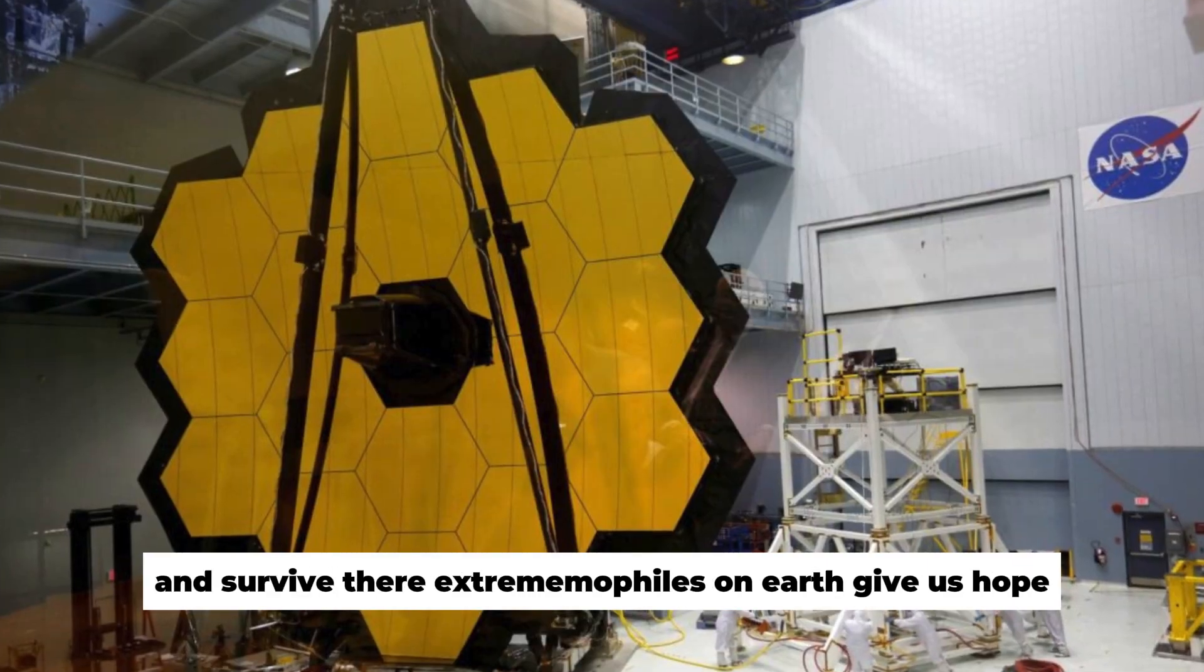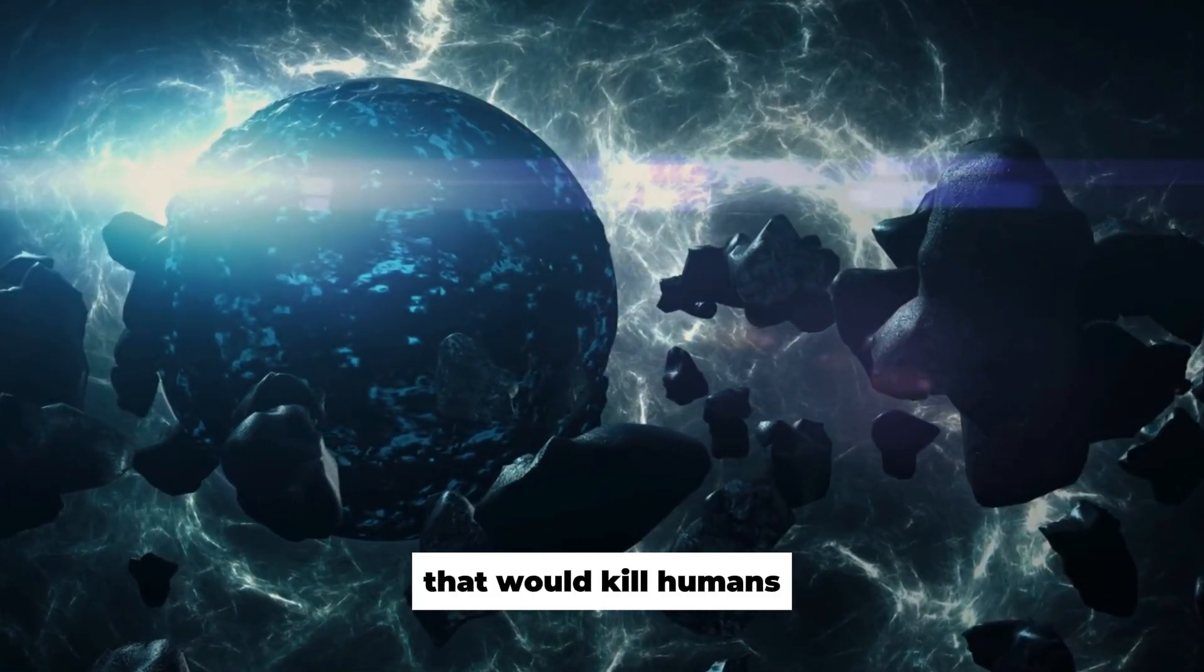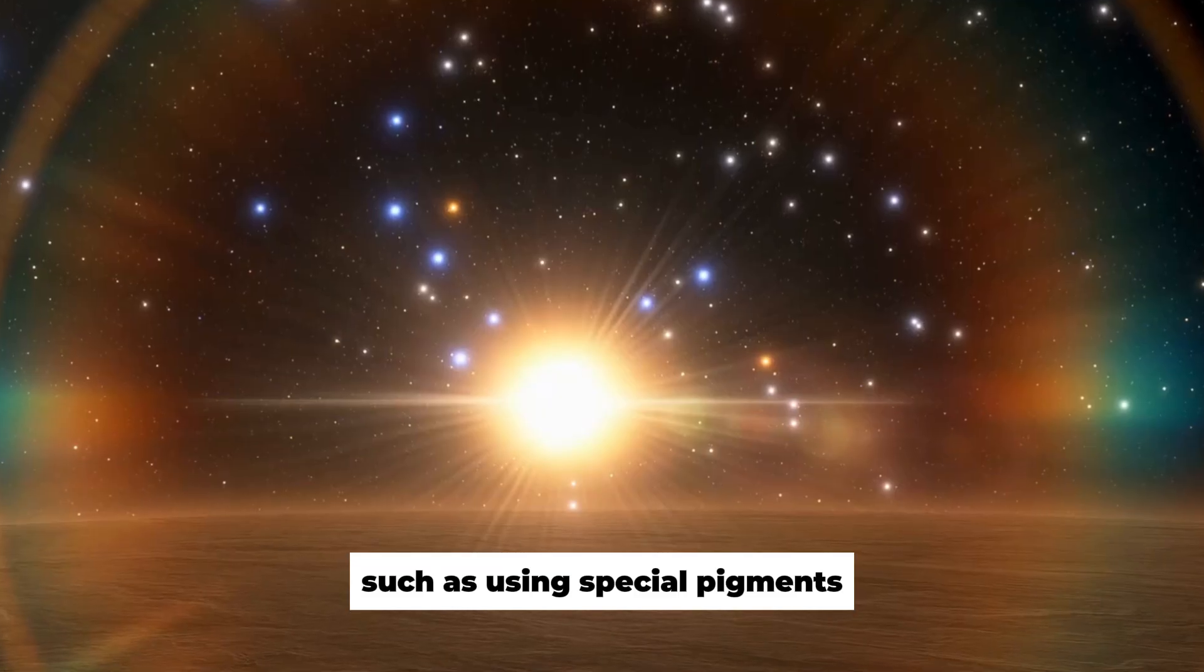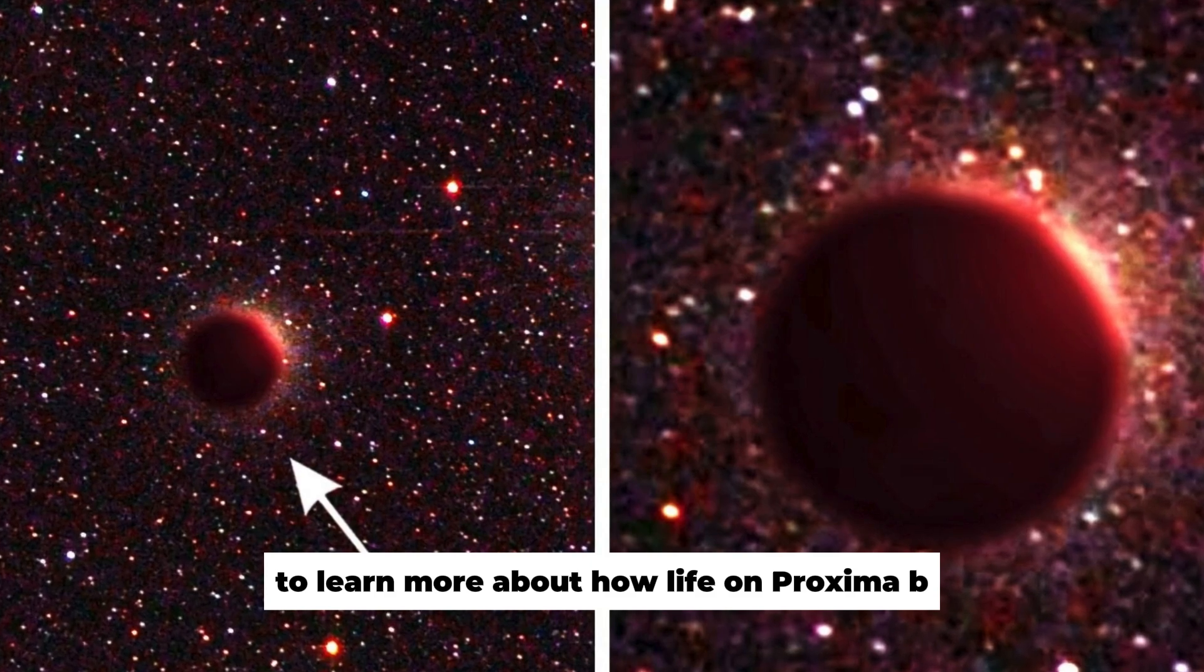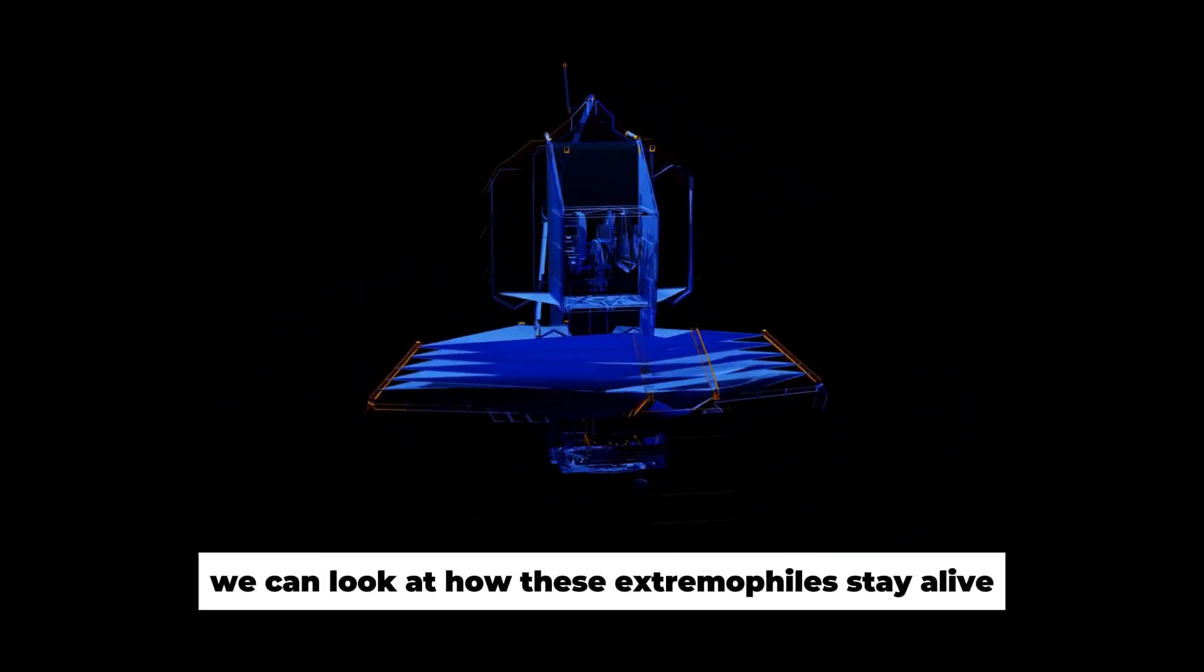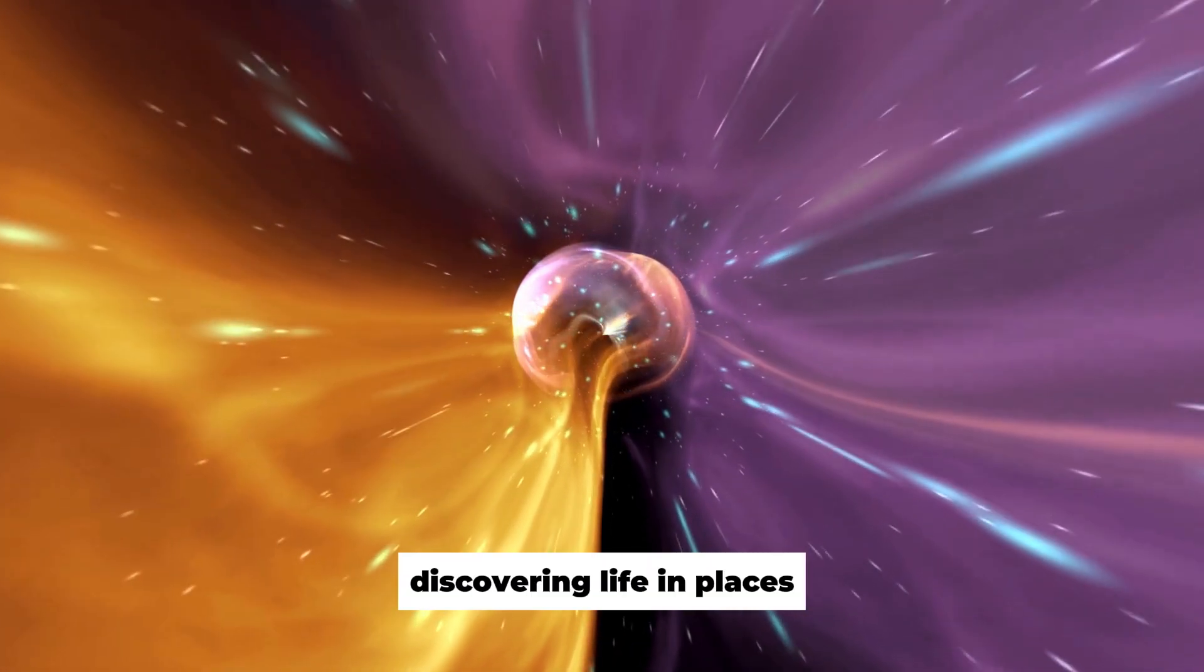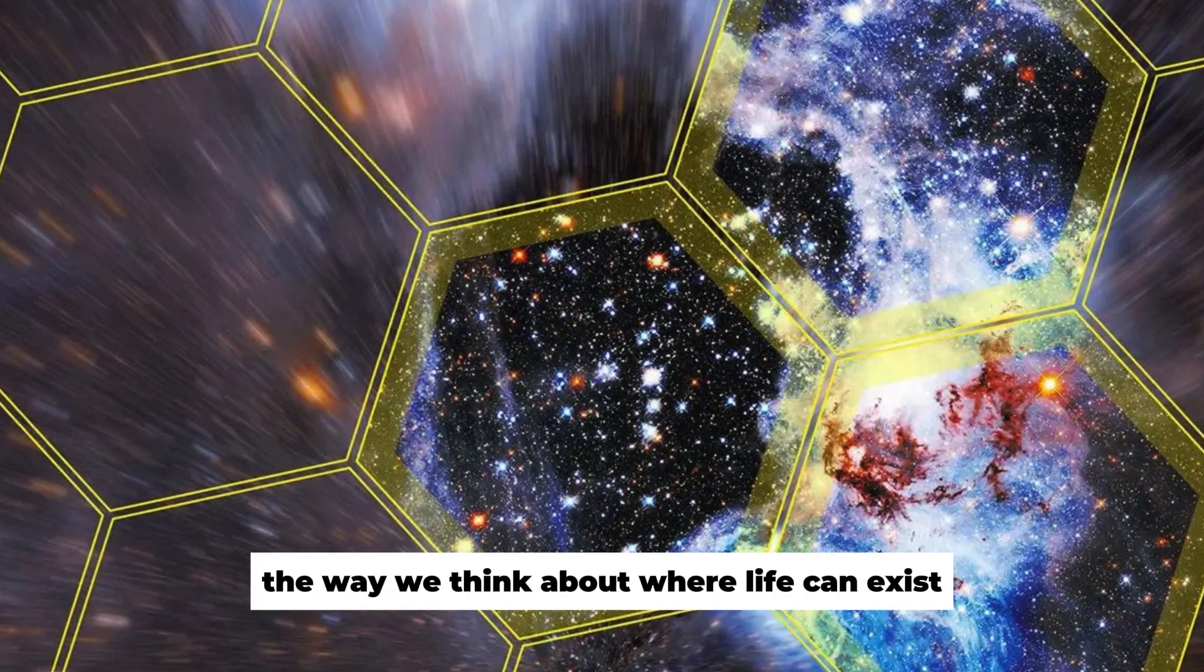Extremophiles on Earth give us hope, especially Deinococcus radiodurans, which can endure great amounts of radiation that would kill humans. Deinococcus radiodurans is interesting because it has unique ways to protect and repair its DNA, such as using special pigments and building its cells in a certain way. To learn more about how life on Proxima b might handle its harsh environment, we can look at how these extremophiles stay alive. It would be amazing to find life on Proxima b that is similar to extremophiles, and can survive high radiation levels or other tough conditions. Discovering life in places where it seems impossible to live could change the way we think about where life can exist.